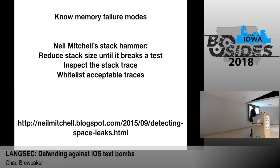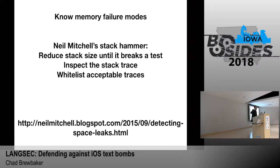Another trick is to always know your memory failure modes. Neil Mitchell's approach is to take the virtual machine running his code and keep reducing the stack size until something breaks, then look at the stack trace. Knowing where your code breaks on all your resource boundaries is really critical, especially if it's not your code. In your CI system, you can whitelist traces of stack traces that are acceptable — and this also helps you reduce the space of your programs.